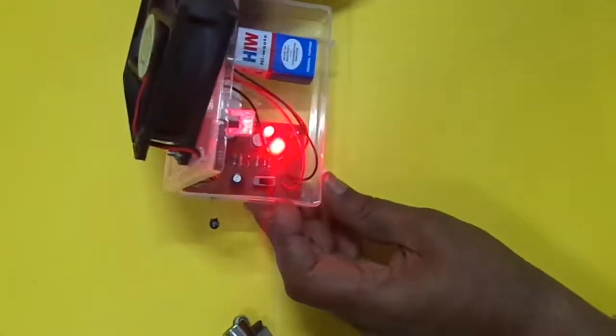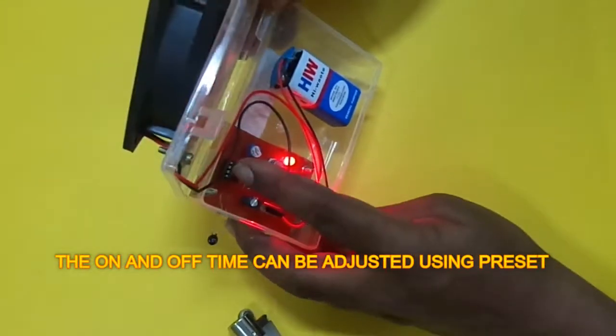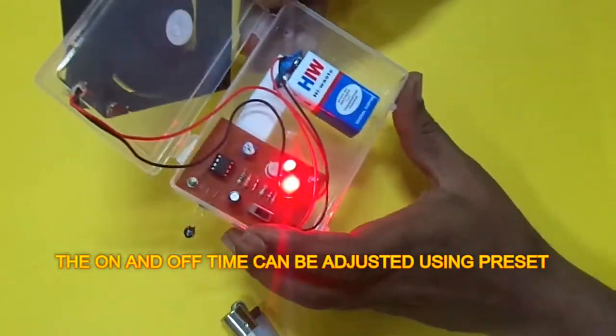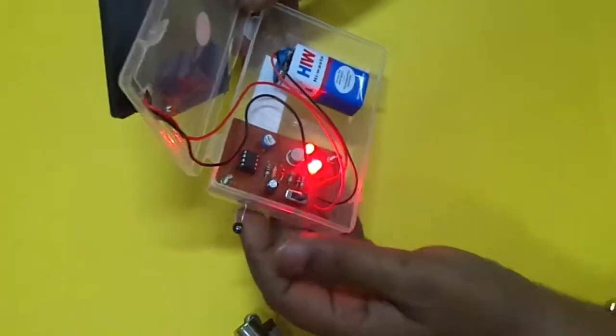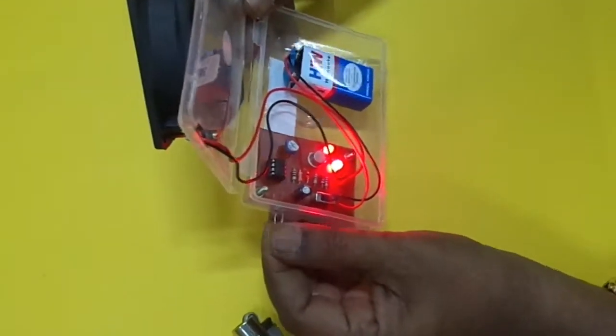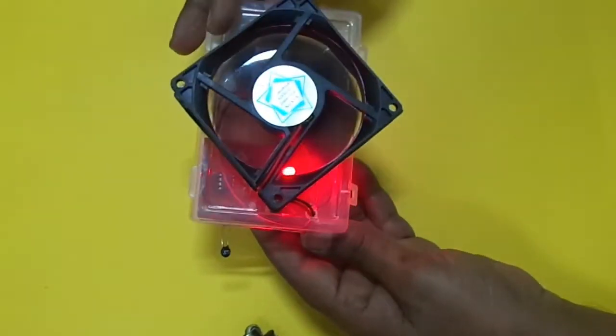It is a simple circuit. It uses an IC 555 as a comparator to switch the fan on and off.